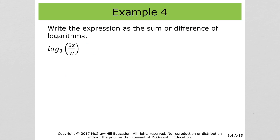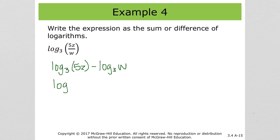The next few problems put a bunch of it together. We'll separate one thing at a time using order of operations. We've got log base 3 of 5z divided by w. So we want to separate the division first: log base 3 of 5z minus log base 3 of w. Then we separate 5z into log base 3 of 5 plus log base 3 of z, minus log base 3 of w. And that's as far as we can go.